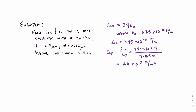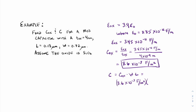We've found C ox, but we still need to find the actual capacitance. This is a simple calculation where we take the width and the length and multiply by C ox. So C equals C ox times width times length, which is 8.6 times 10 to the minus 3 farads per meter squared, times the width of 0.72 micrometers, times the length of 0.18 micrometers. When we perform this calculation, we find that the capacitance is 1.1 times 10 to the minus 15 farads. Since 10 to the minus 15 is femto, we can write this as 1.1 femtofarads.